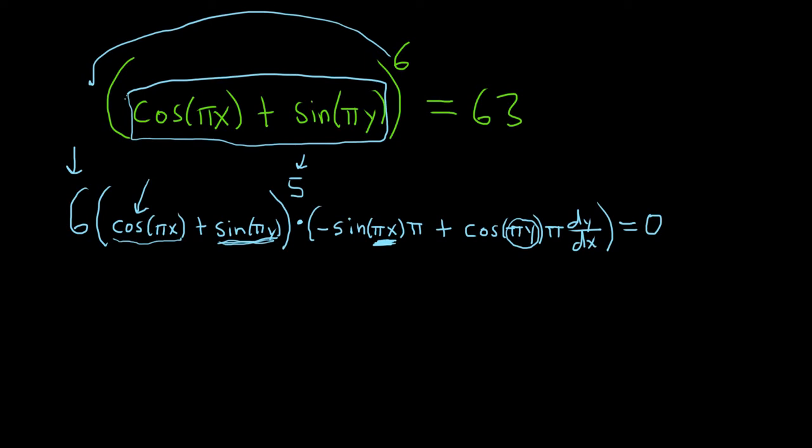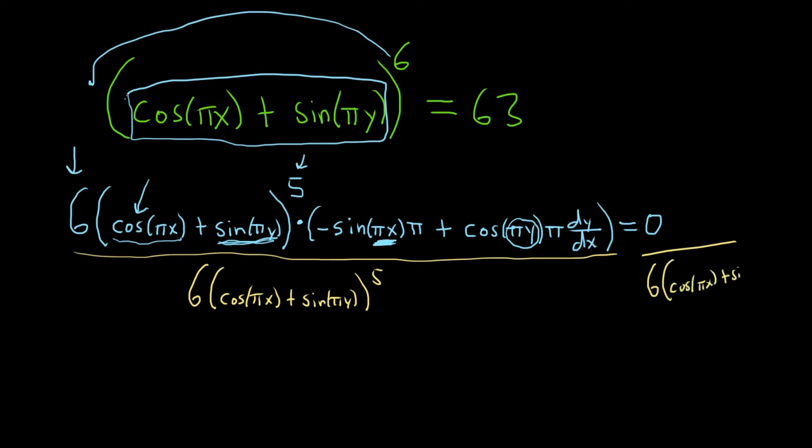The easiest way to do this problem is just to divide now both sides by this stuff here with the 6. So 6, parentheses, cosine πx plus sine πy to the 5th. And then do that over here as well. 6, cosine πx plus sine πy to the 5th. So this goes away.